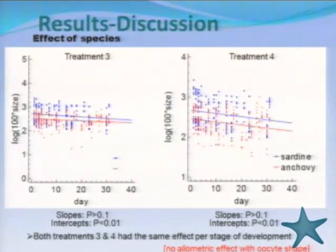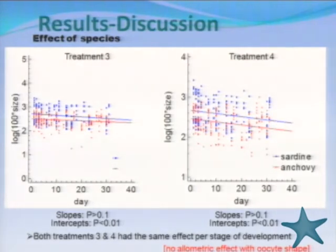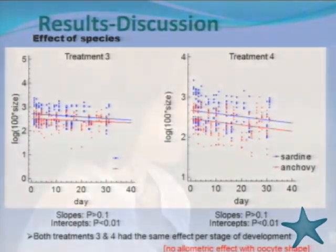Concerning the effect of shape, which we assessed by comparing the two species, the analysis of covariance showed that the slopes did not differ significantly between the regression lines of the two species. This means there was again no allometric effect of oocyte shape on the effects of the preservation treatments.